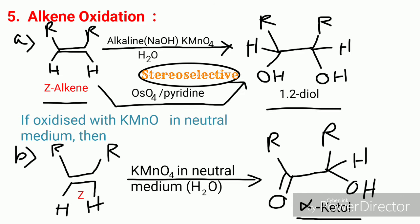The fifth is alkene oxidation. Any alkene treated with alkaline KMnO₄ and H₂O, or osmium tetroxide (OsO₄) and pyridine, gives the corresponding cis-1,2-diol — not trans, only cis-1,2-diol. This reaction is stereoselective: cis alkene gives cis product and this is always true. If we use neutral KMnO₄ medium with KMnO₄ and H₂O, we get not the cis diol but an alpha-ketol as the new product.